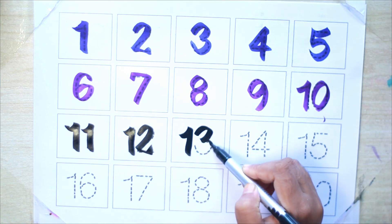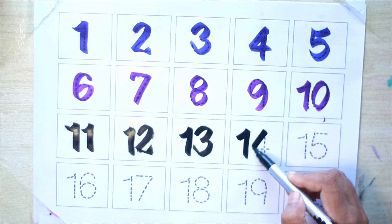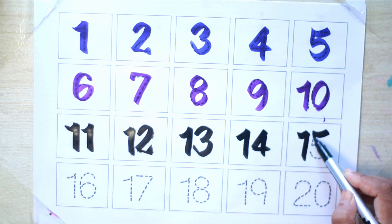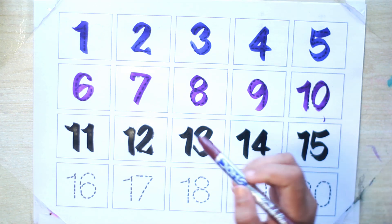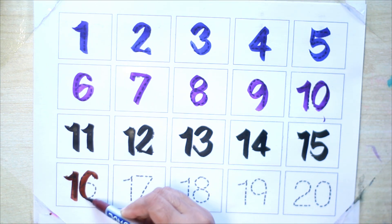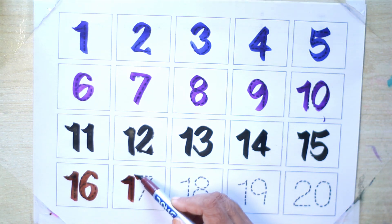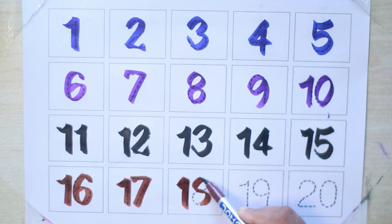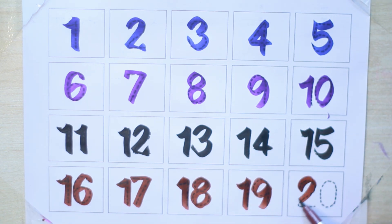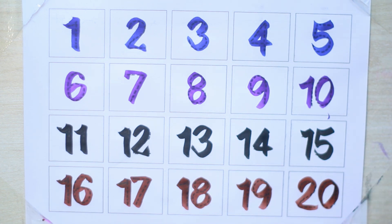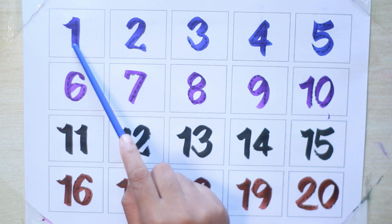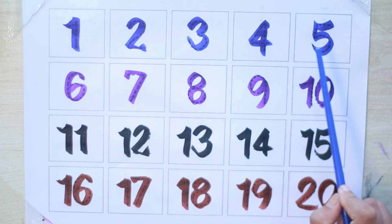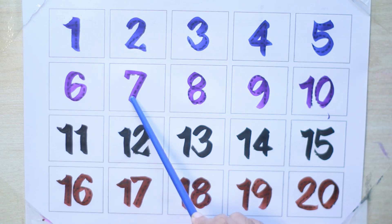13, 14, 15. Brown color: 16, 17, 18, 19, 20. Let's count again: 1, 2, 3, 4, 5, 6, 7, 8.